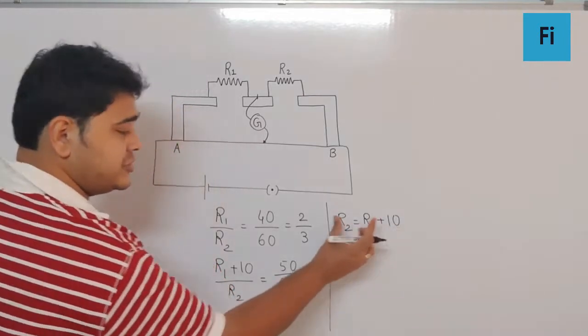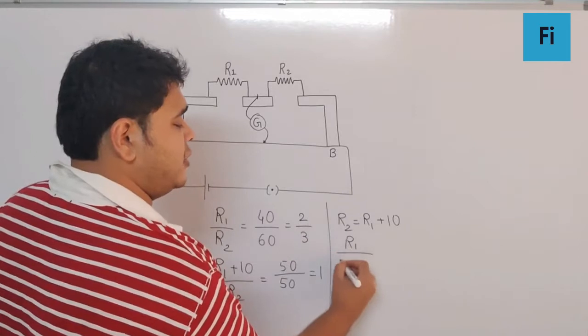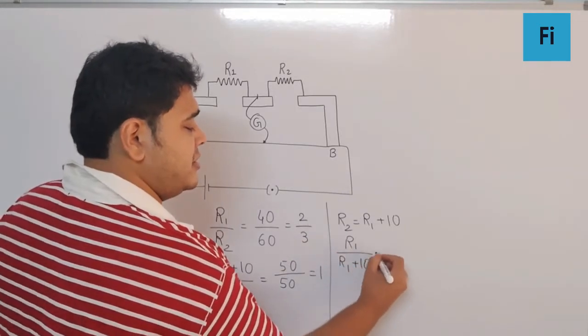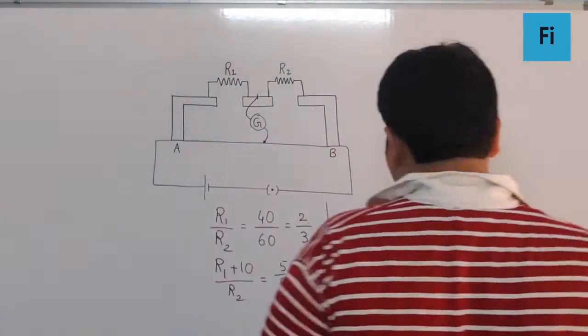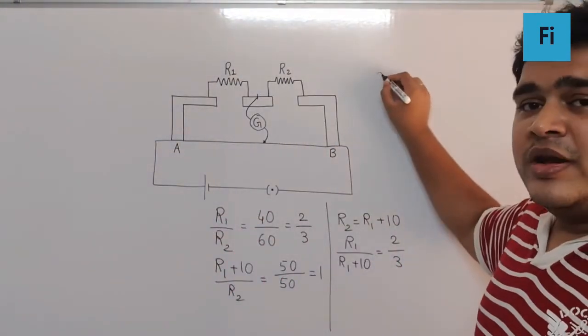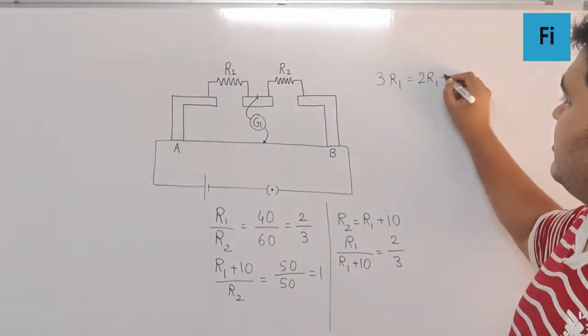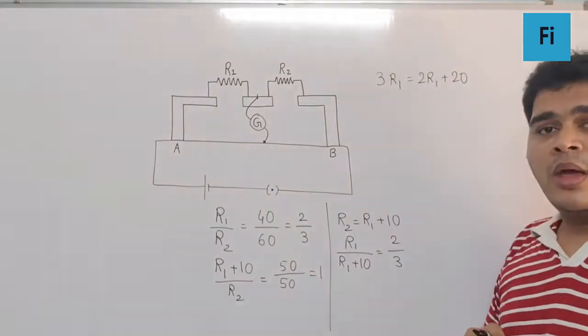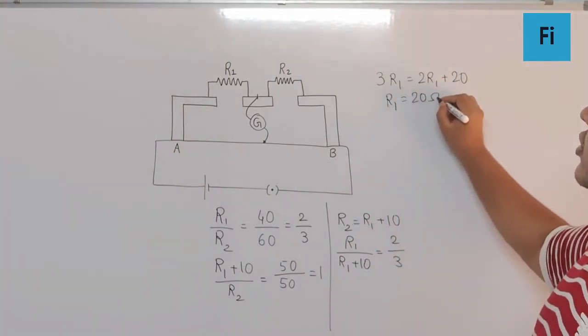We can substitute R1 plus 10 and write R1 upon R1 plus 10 as 2 by 3. Now if we cross multiply, we get 3R1 is equal to 2R1 plus 20. 2R1 goes on the other side and becomes minus, so R1 is 20 ohm.